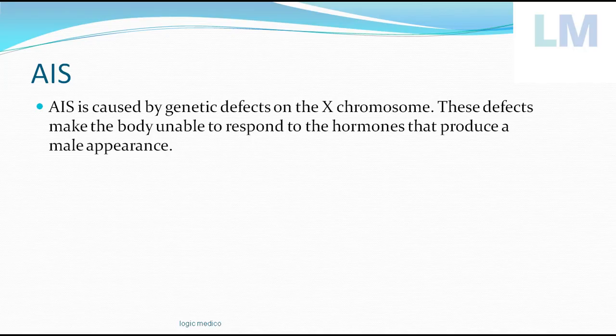Androgen Insensitivity Syndrome is also called testicular feminization — that is the other name for this condition. These individuals have testes, but they appear like females; their body characteristics are female. The testes are located inside the abdominal cavity but the person appears female, hence the term testicular feminization.